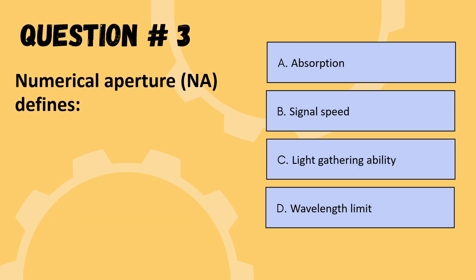Next question: numerical aperture (NA) defines — options are absorption, signal speed, light gathering ability, or wavelength limit. The correct option is C: light gathering ability.